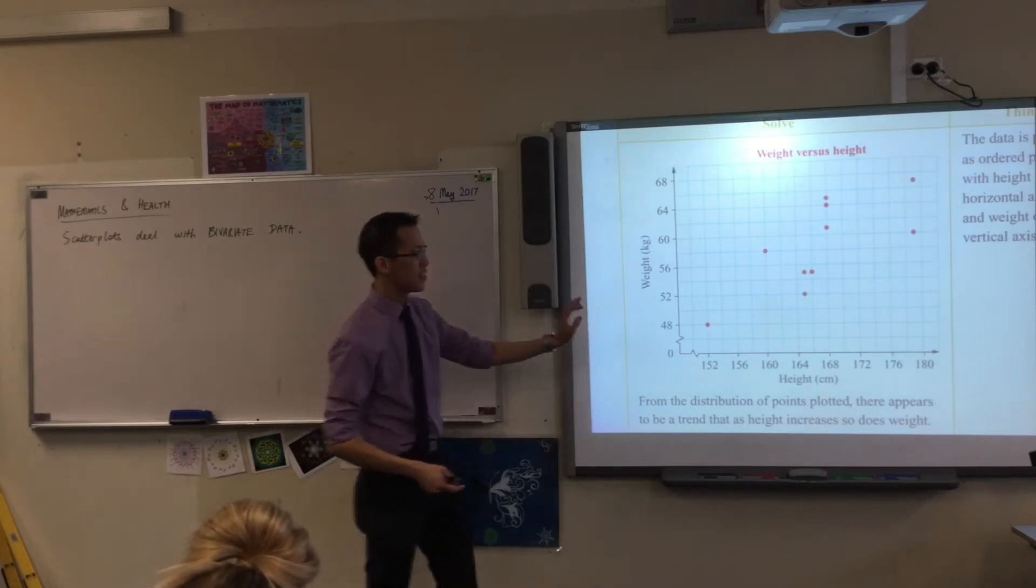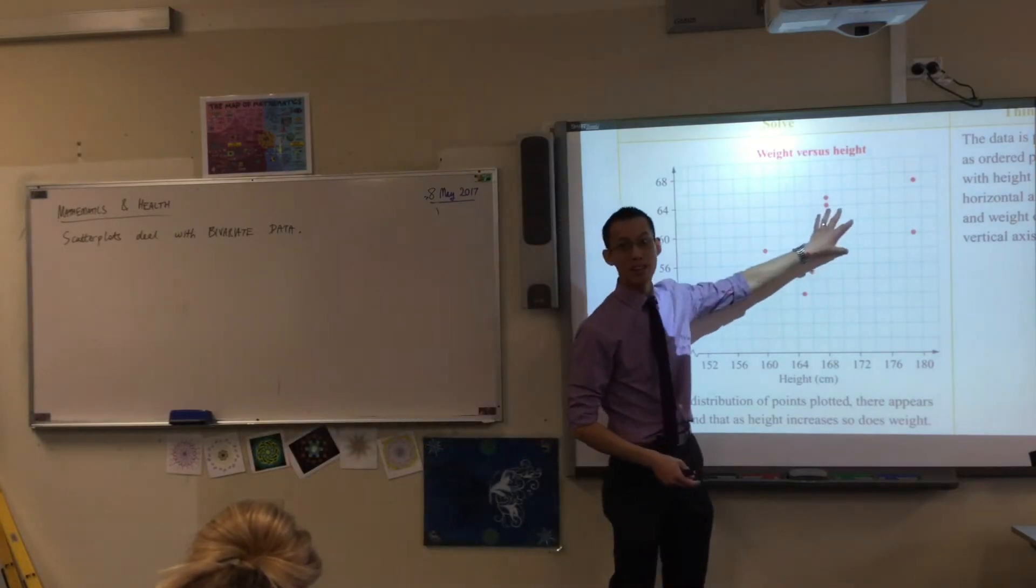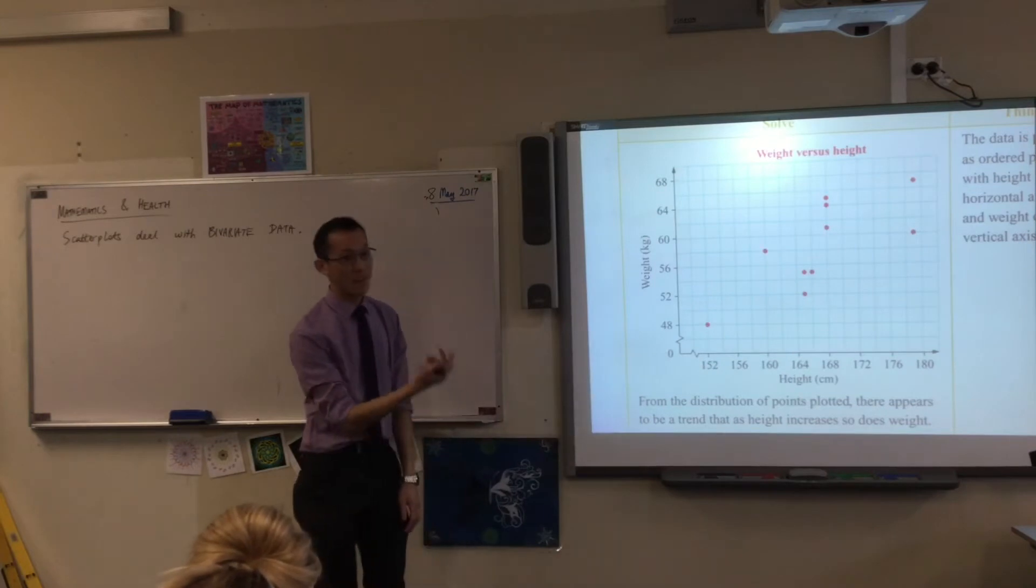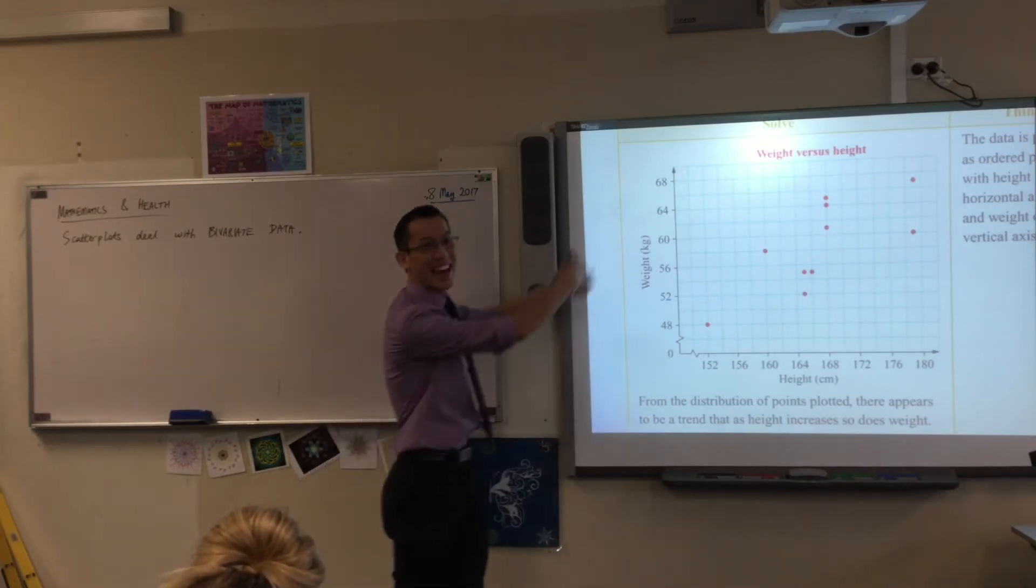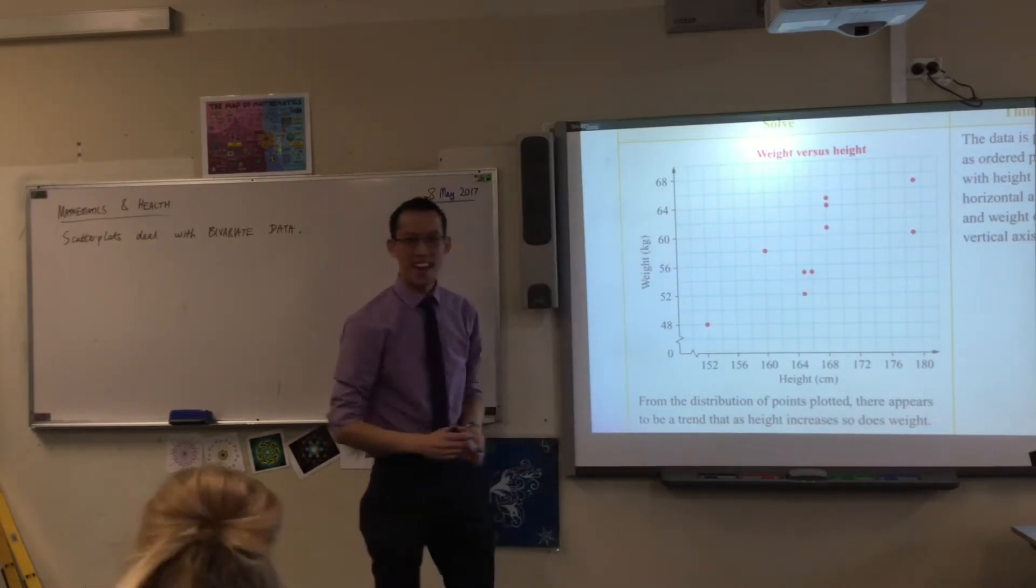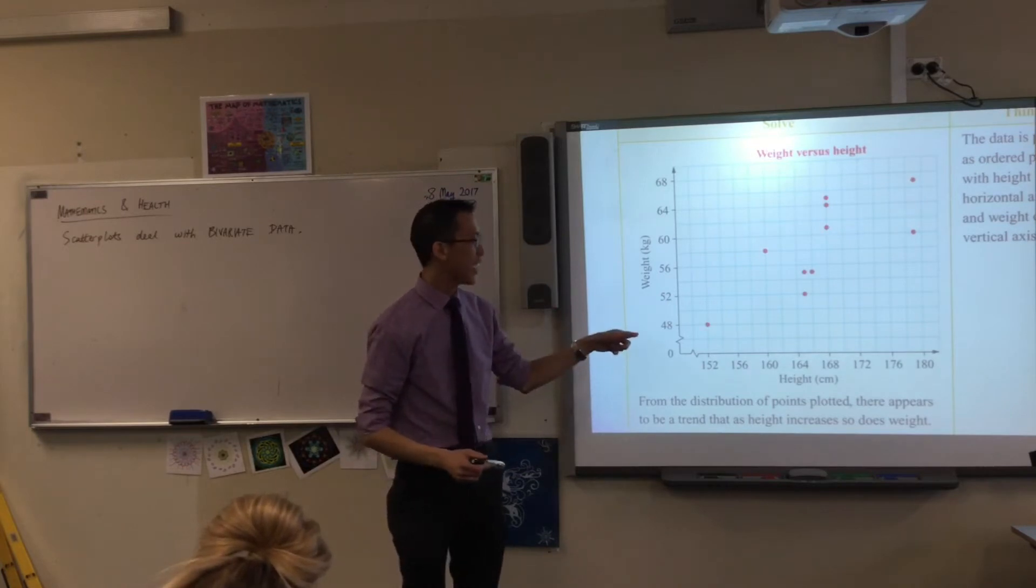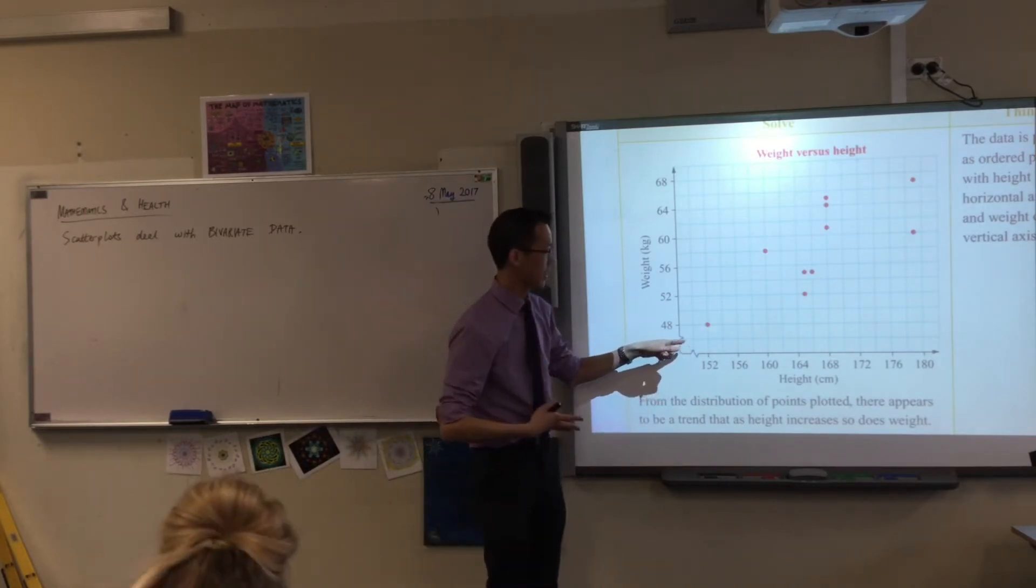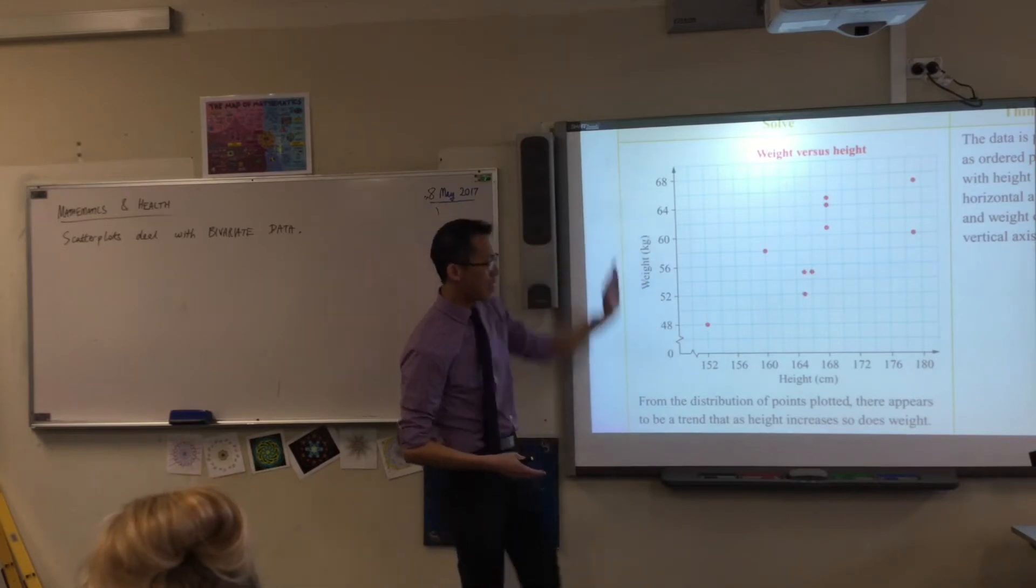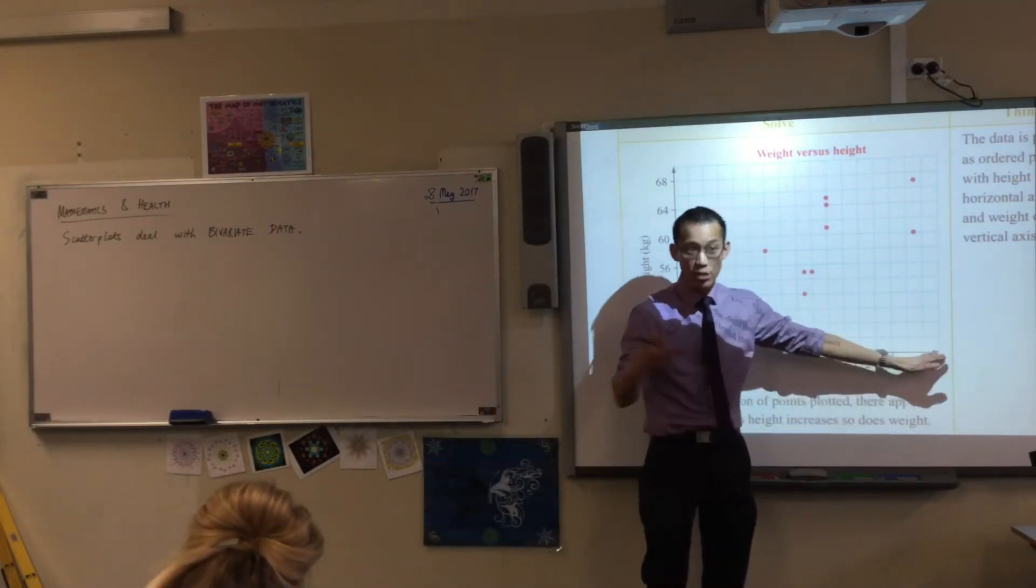So you can see that this is the scatterplot. Why do you think they call it a scatterplot? Because when you plot the points, the dots are scattered all around. And you can see here, generally speaking, the more you weigh, the taller you are.